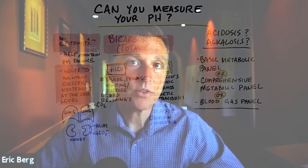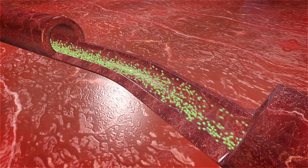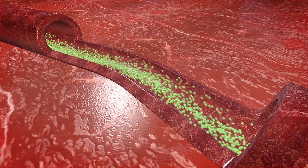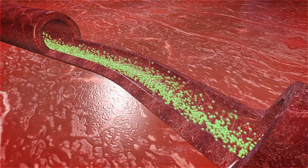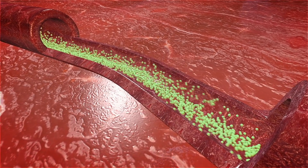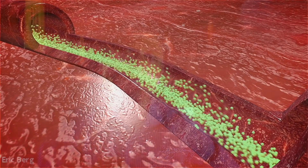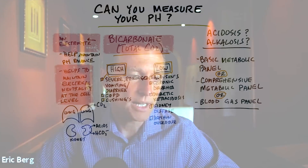In fact, your pancreas makes bicarbonates to neutralize the stomach acid that is coming into the small intestine. But you also have bicarbonates in your blood to buffer the pH and keep it at a certain level. They're an electrolyte because they carry a negative charge when going through the body.